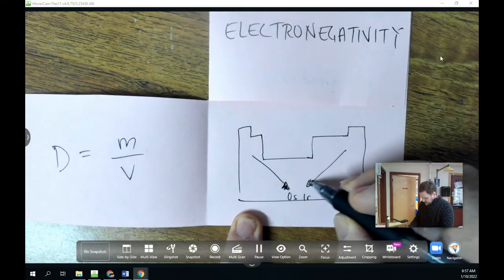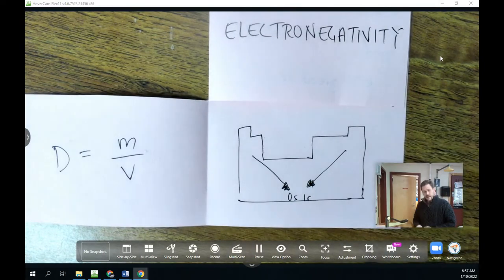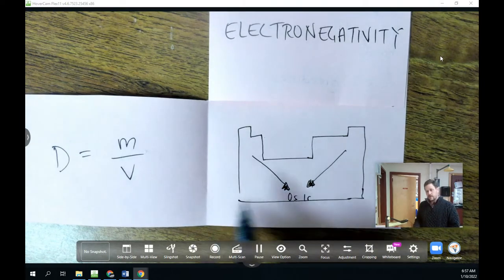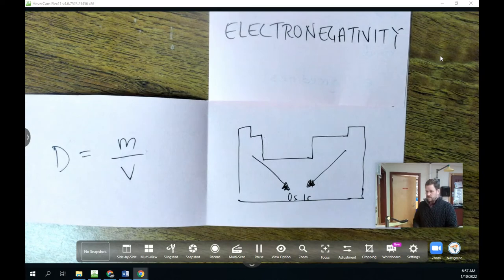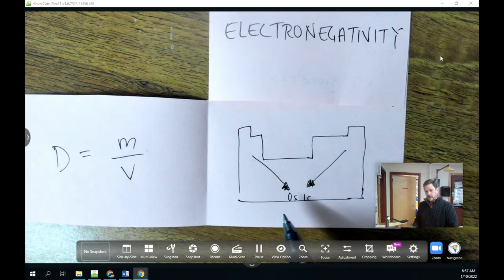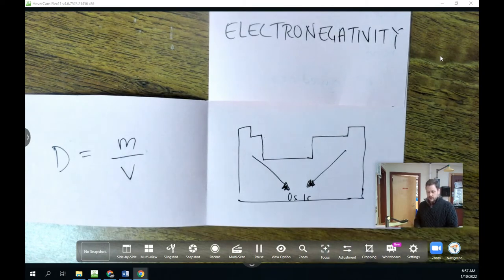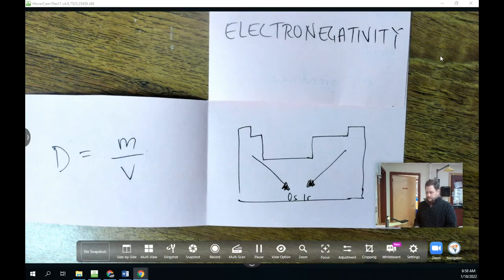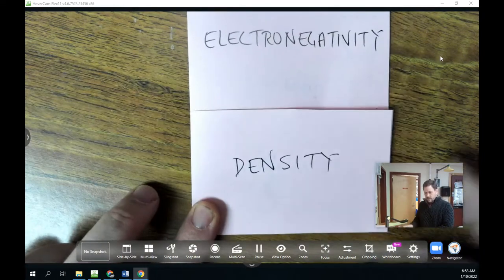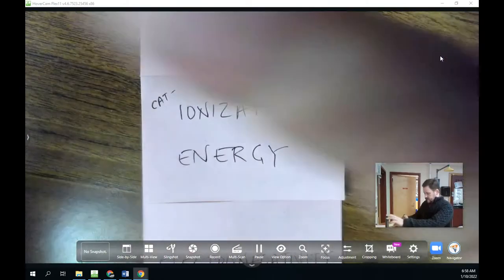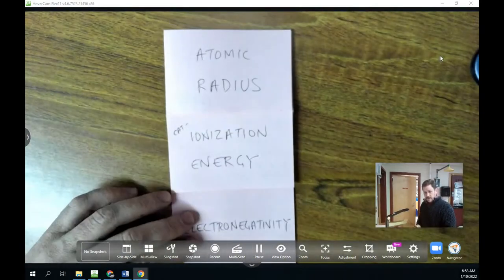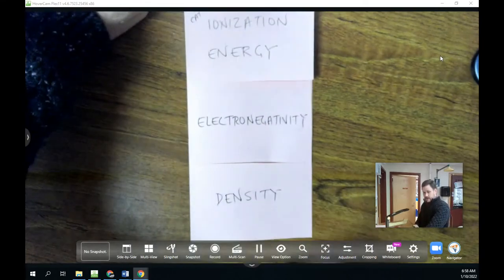And that should make sense if we think about how the masses of elements change as we go across a period or down a group and how the volume of the electron cloud changes as well as we go from unpaired to paired electrons. And we consider filling the orbitals that we've learned about. So there are four periodic trends that we should be familiar with. They are atomic radius, ionization energy, electronegativity, and density.